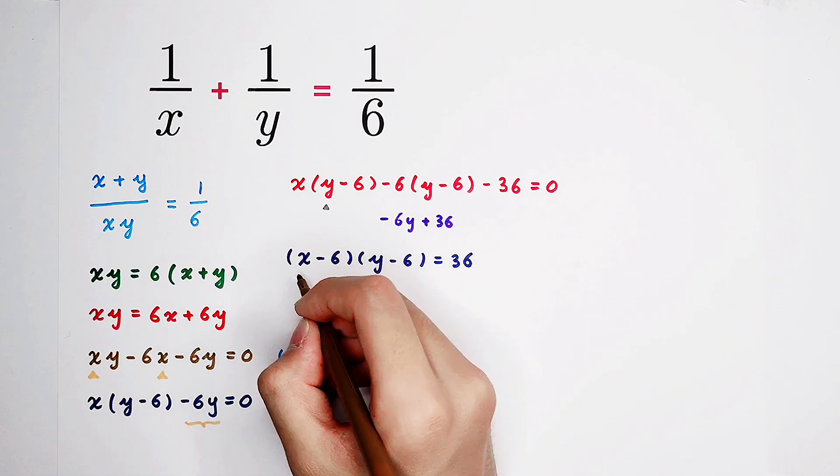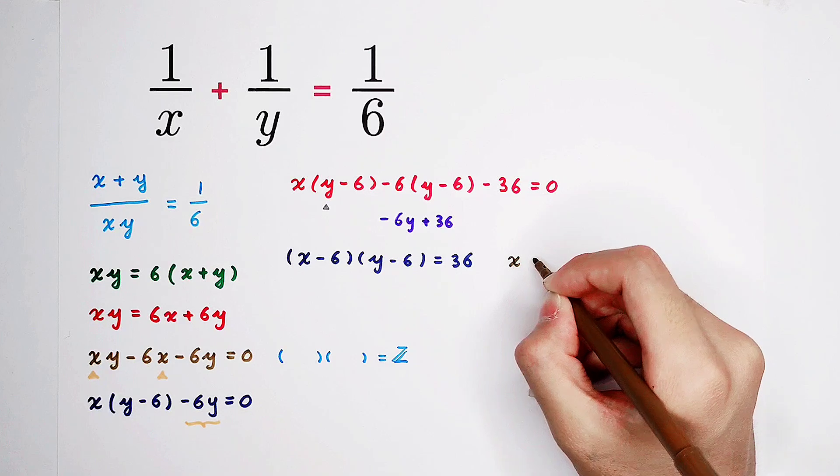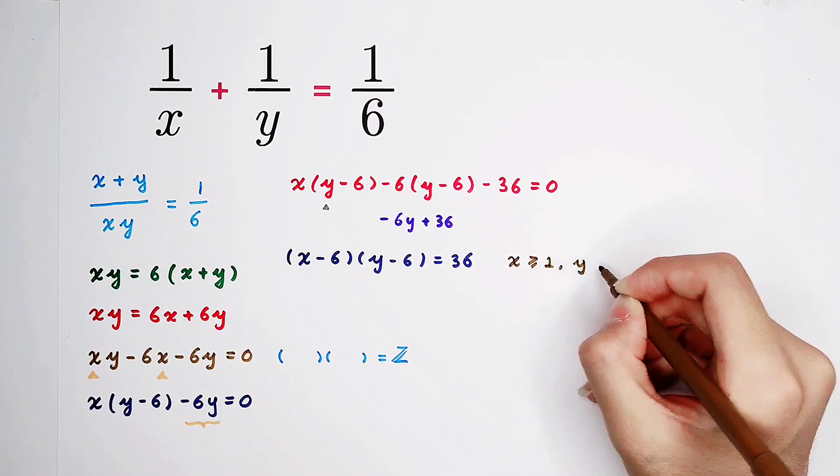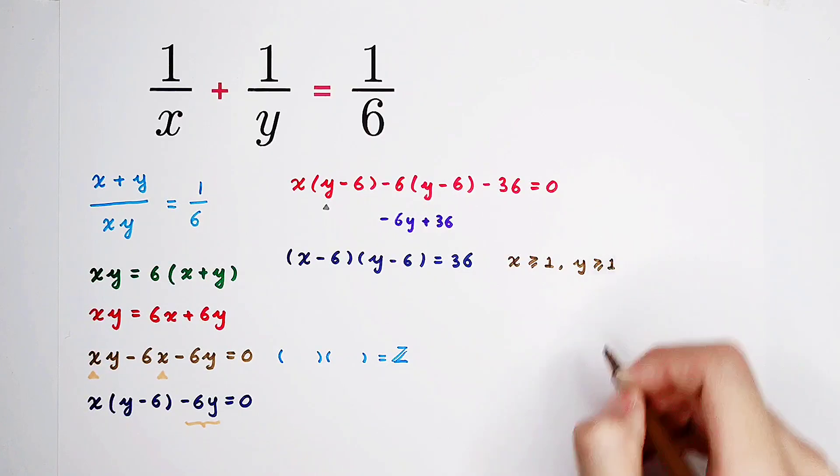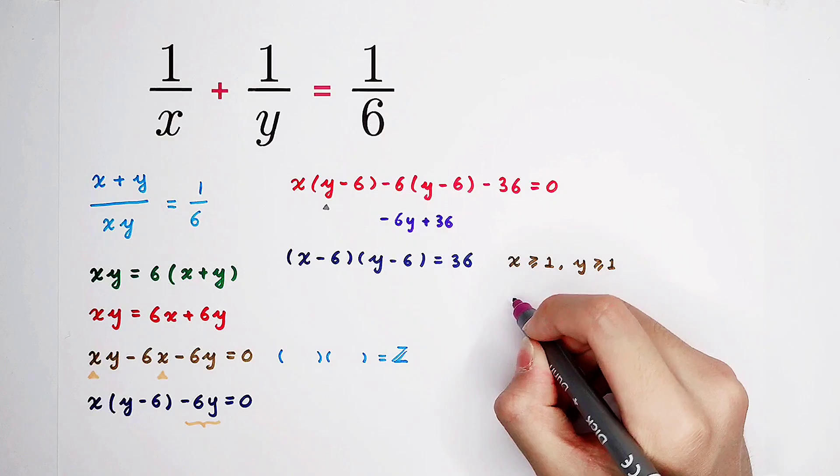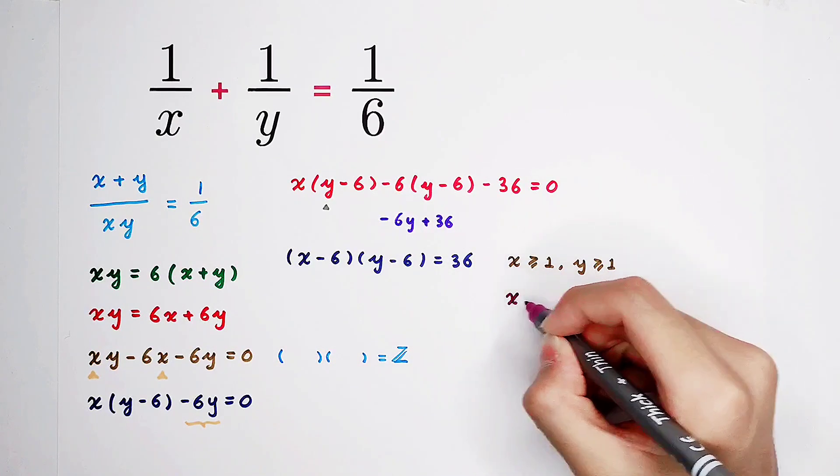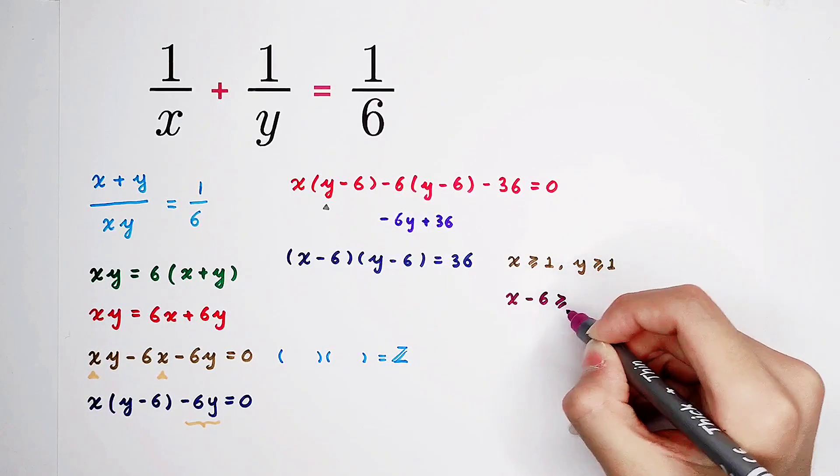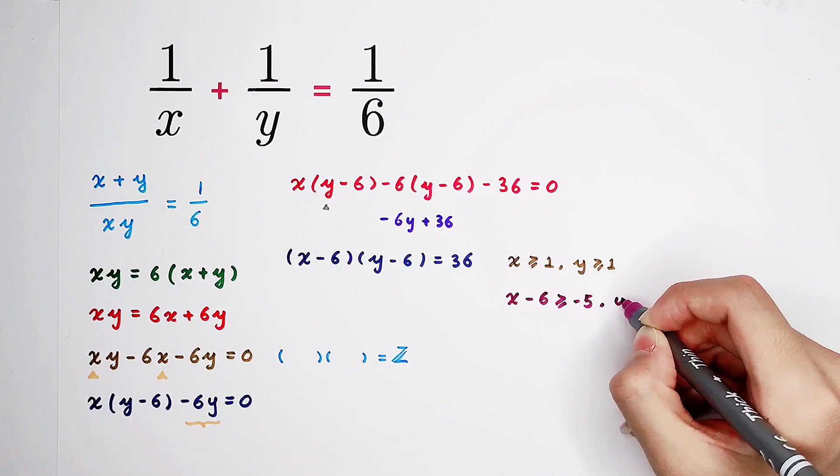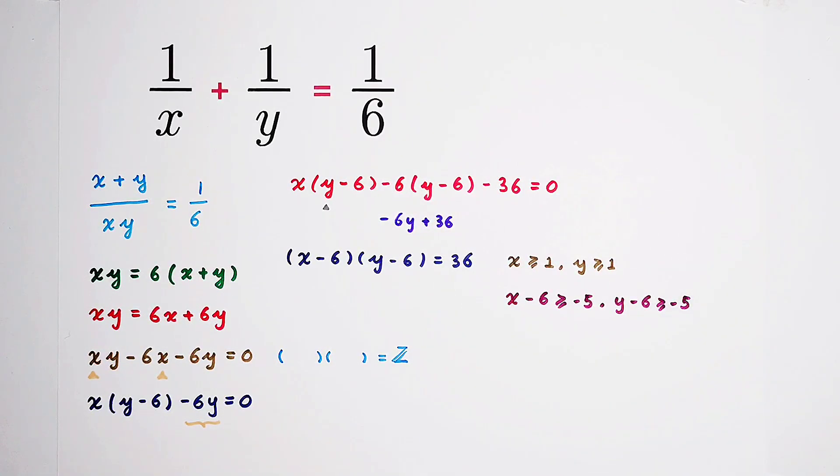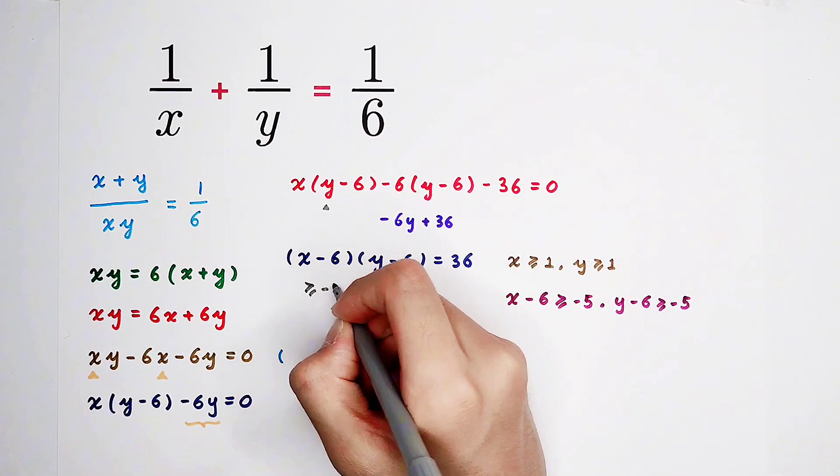We know that x is a positive integer, greater or equal to 1. Y as well. So here, if we subtract 6 from both sides, then it's gonna be x minus 6 should be greater or equal to negative 5. And y minus 6 as well. So these two terms, they should be greater or equal to negative 5.